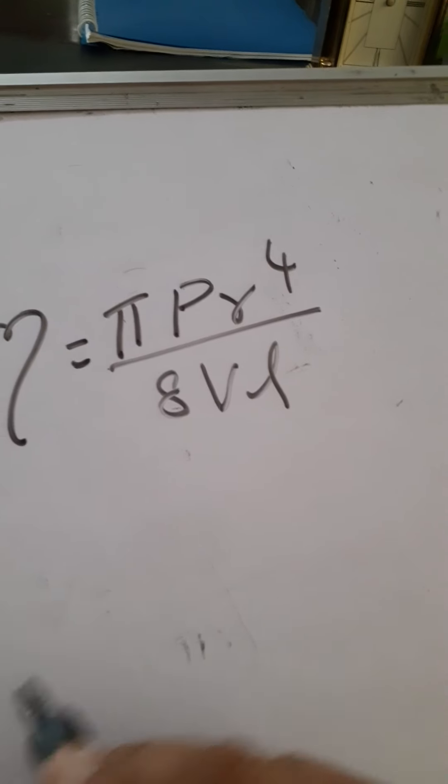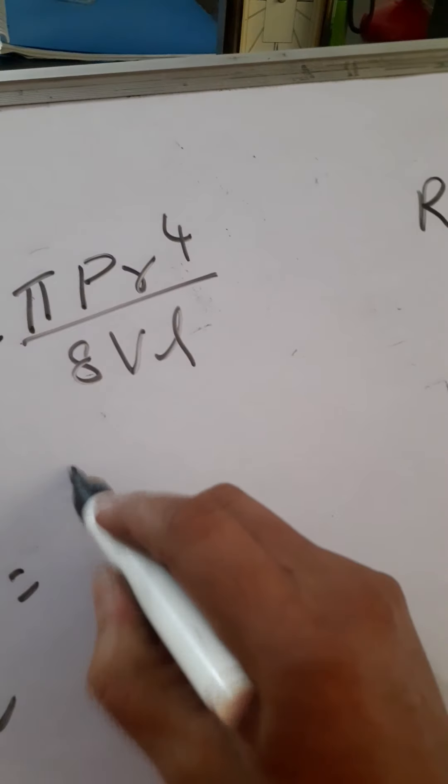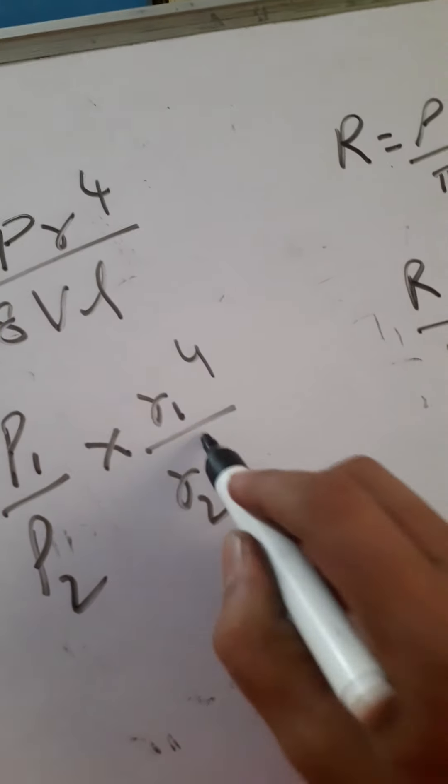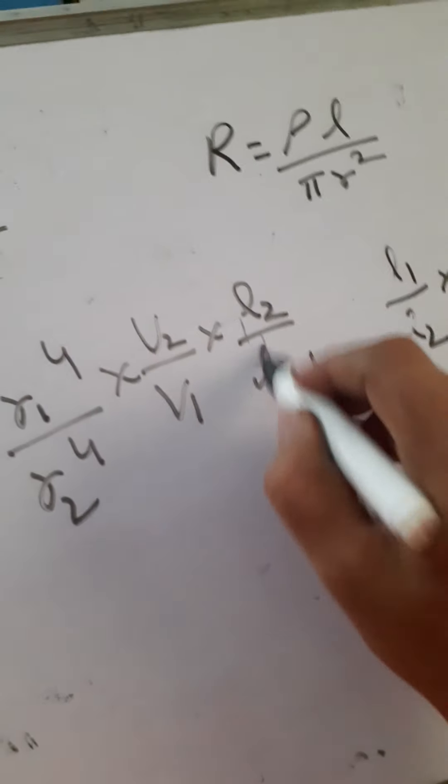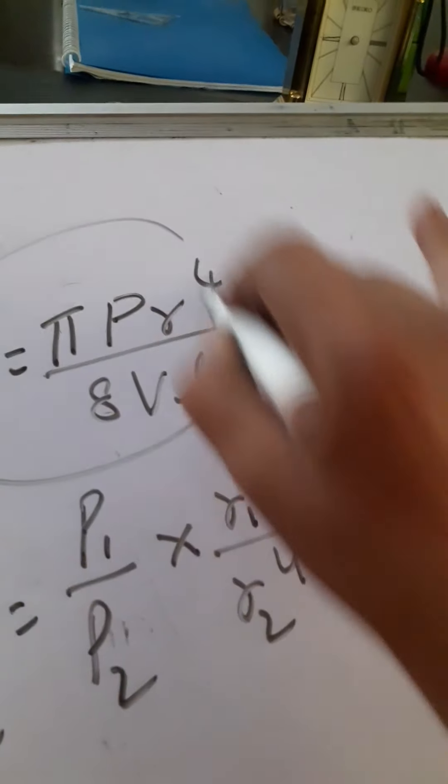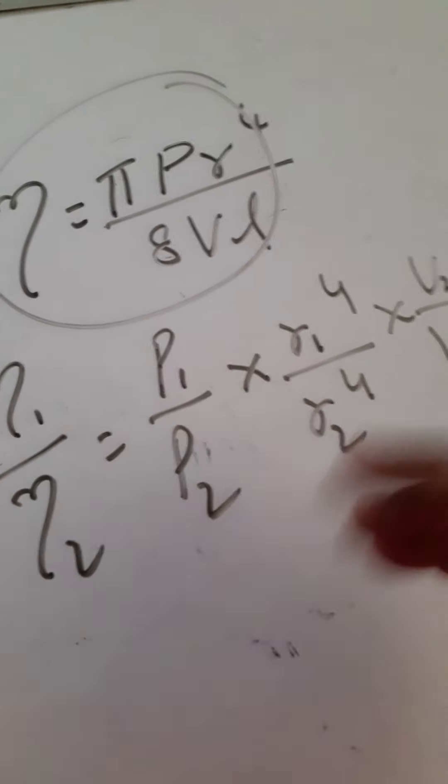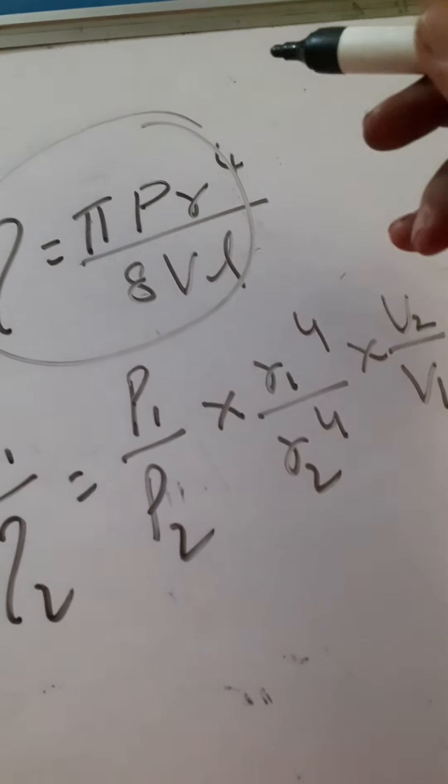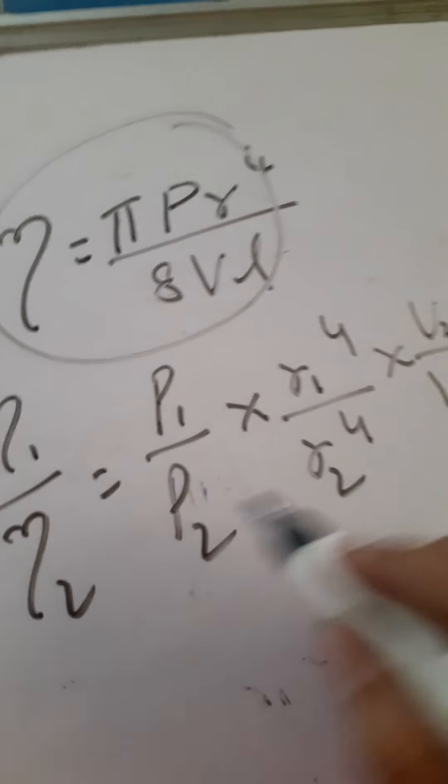Therefore, we can write Eta 1 by Eta 2: P1 by P2 into R1 power 4 by R2 power 4, V2 by V1 into L2 by L1. So only the concept we have to learn in Physics. After that, we have to do the problem by using mathematical concepts. Proportionals. We have to obtain the relation.